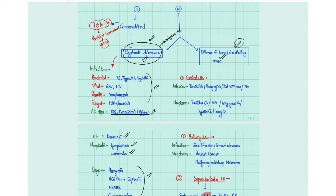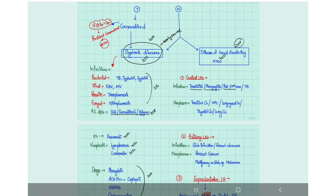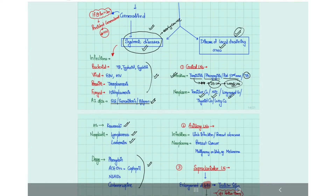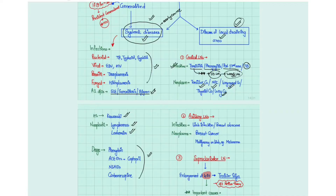For localized lymphadenopathy, always rule out local causes first. For cervical lymph nodes, local infections such as tonsillitis, pharyngitis, and posterior nasal infections, as well as tuberculosis, can cause cervical lymphadenopathy. Tonsillitis characteristically leads to enlargement of the jugulodigastric lymph nodes, and in chronic tonsillitis this is known as Waldeyer's sign. Cervical lymph nodes can also be enlarged due to tonsil cancer, nasopharyngeal cancer, laryngeal cancer, thyroid cancer, or lung cancer, where enlarged cervical lymph nodes are often the presenting complaint.